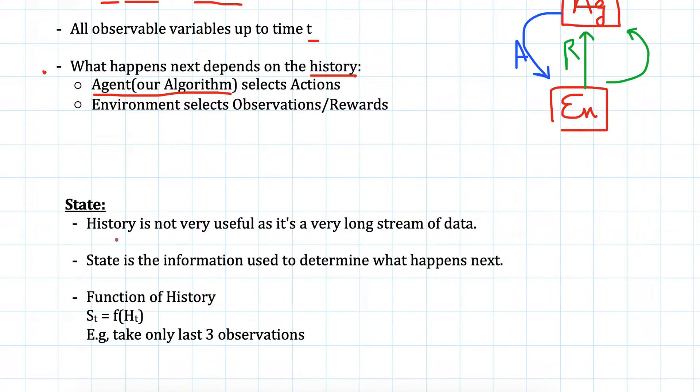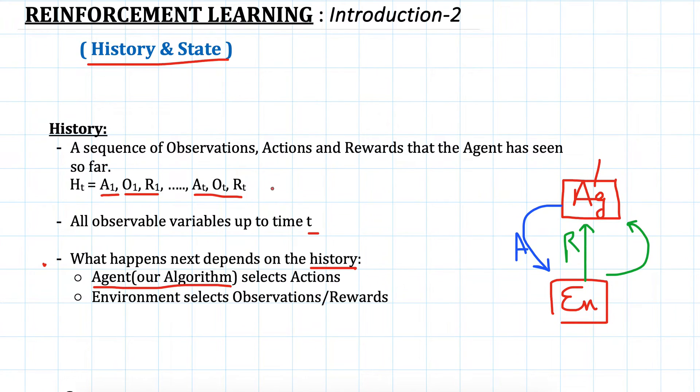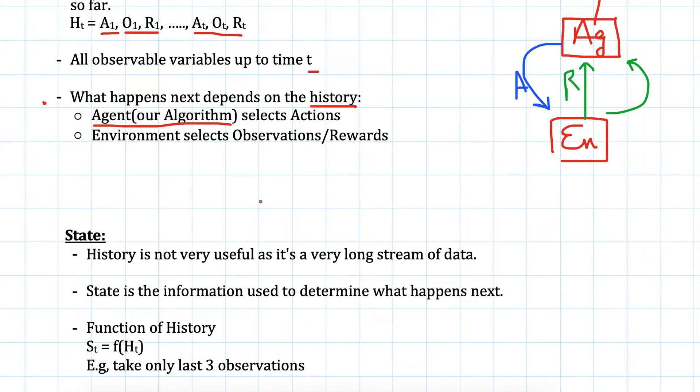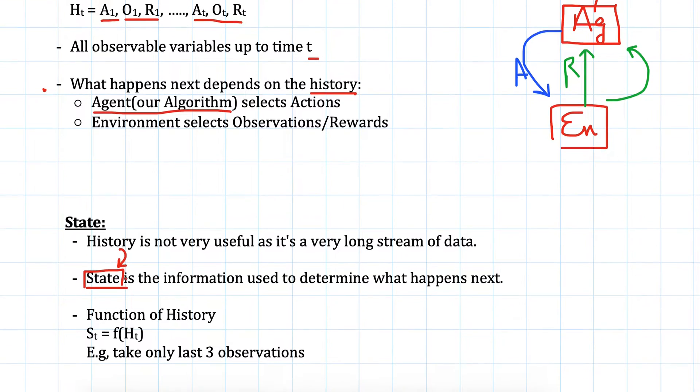Now we know what is history, we can try to understand what is a state. History will grow over time and it will be lots and lots of information, a very long stream of data, and it will be very tough to look back at all that history whenever performing a new action. So we extract useful information from the history. State is the information used to determine what happens next. Instead of history, we will use just the state, which is information extracted from history. It can be any function of history.